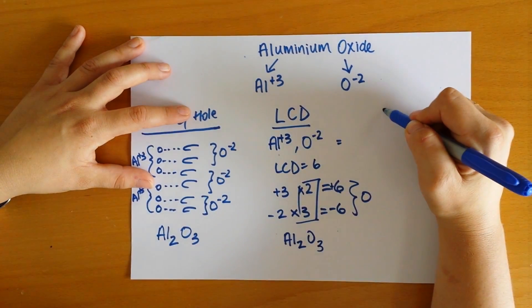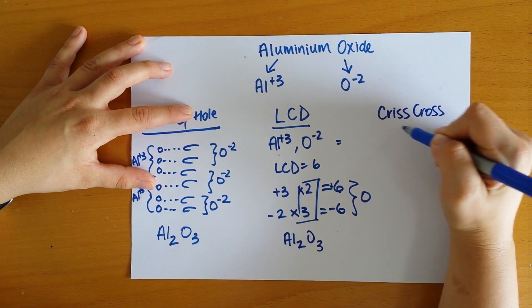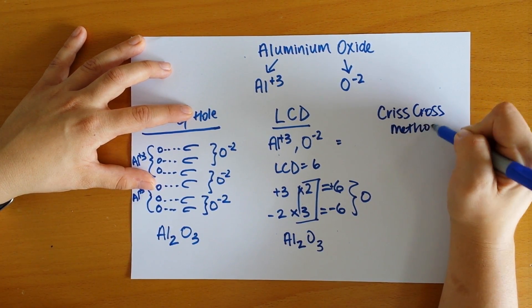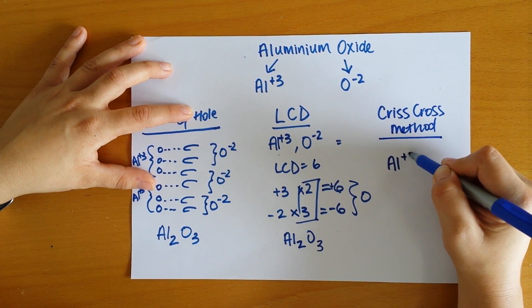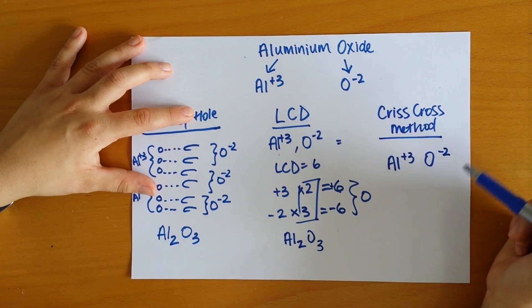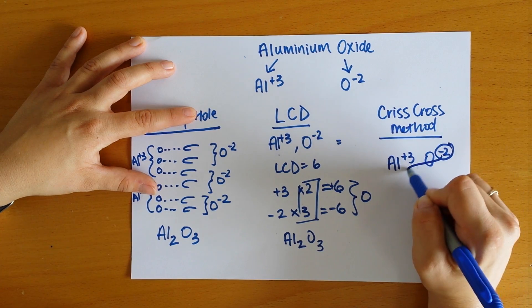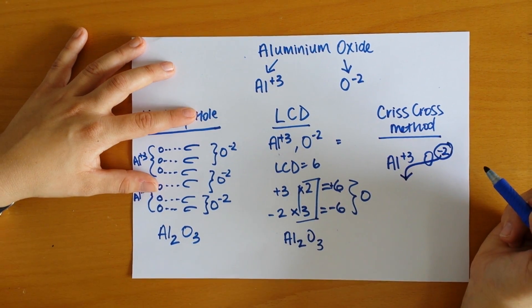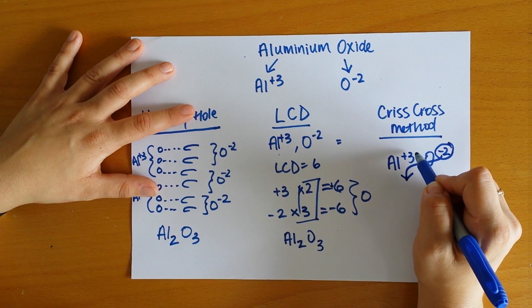Now this is what we call the criss-cross method, and this is probably the easiest to see. So if we line up again aluminum three plus and O two minus, what you may have picked up already is that the two up here ends up as the ratio of aluminum ions that we need.